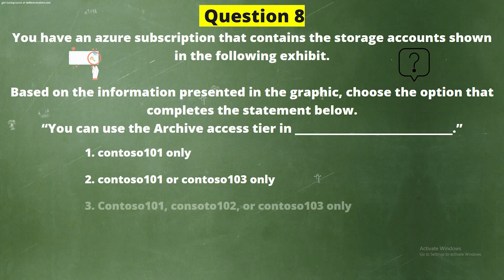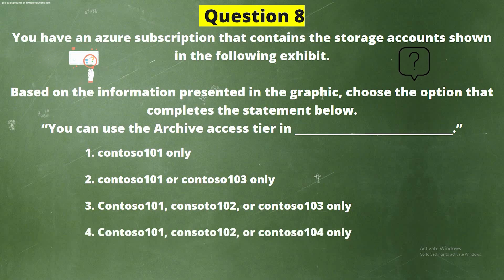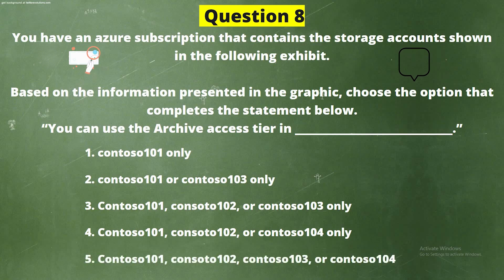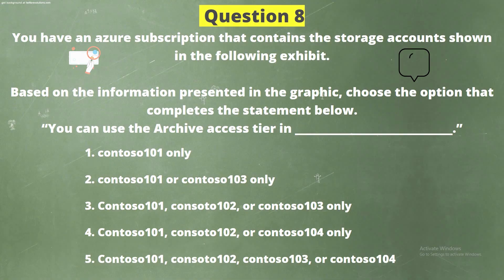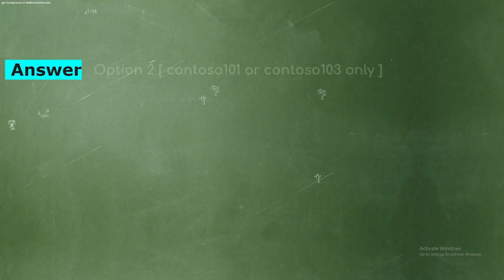Option 3, Contoso101, Contoso102, or Contoso103 only; option 4, Contoso101, Contoso102, or Contoso104 only; option 5, Contoso101, Contoso102, Contoso103, or Contoso104. The correct answer is option 2: Contoso101 or Contoso103 only.